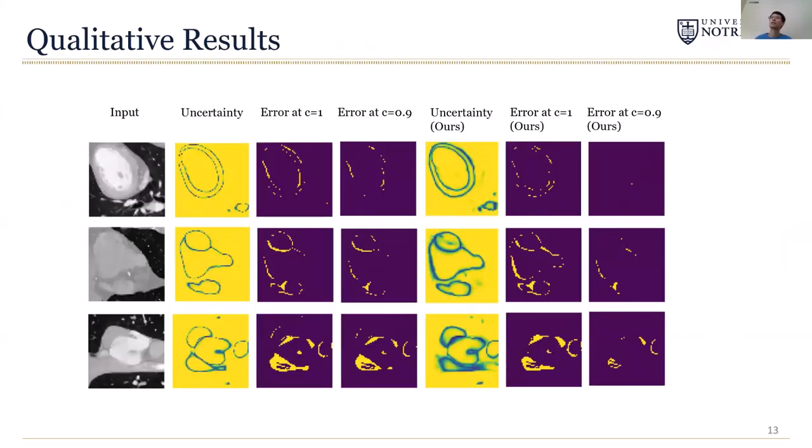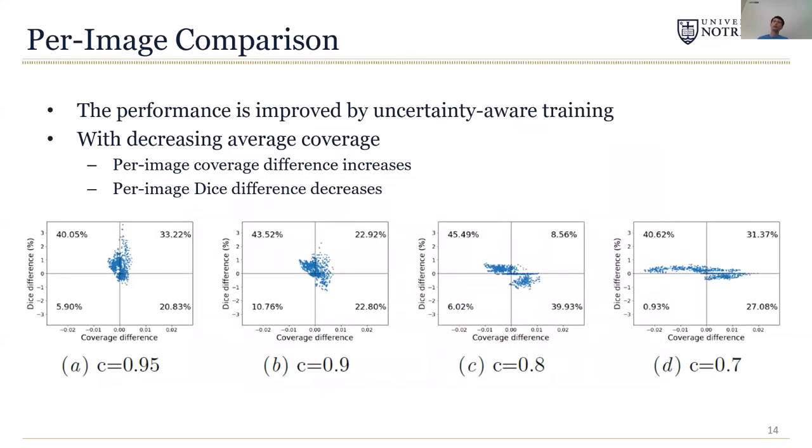These are some qualitative results. The finding is similar to that of quantitative results. We can see that the error is greatly reduced at the cost of coverage and our model has less error compared with the baseline. We also did the per-image comparison with the baseline to better understand the effect of our method. In the figure below, each dot represents one image. The x-axis is the difference in per-image coverage and the y-axis is the difference in dice coefficient. The dot in the first quadrant means our method is better in both coverage and dice.